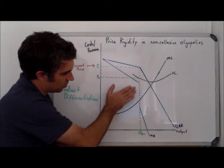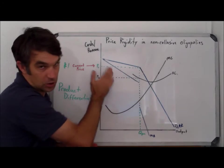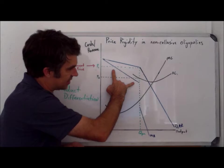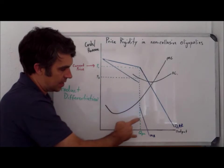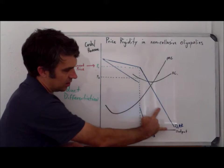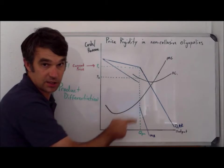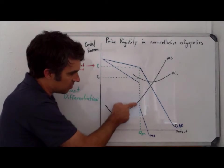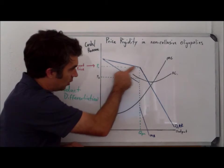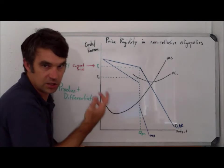So we get this marginal revenue curve that's broken into really three sections. You get an elastic section that goes along with that, an inelastic section that goes along with this, and then this vertical section that connects the two. Keep in mind that vertical section is directly below the kink, which is the current price.